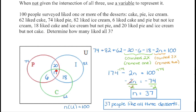Now that we know there are 37 people in the middle, you can actually figure out the number of people who like pie only, ice cream only, or cake only. When you total everyone up — because there is no complement in this question — we should have 100 people within that diagram.